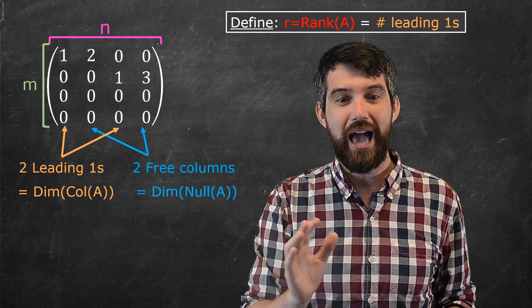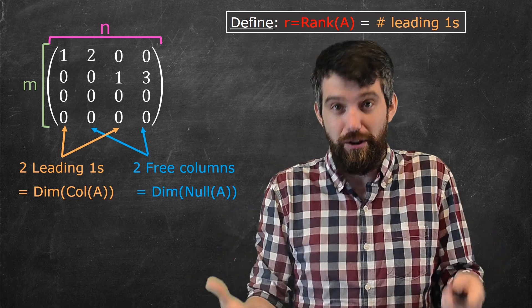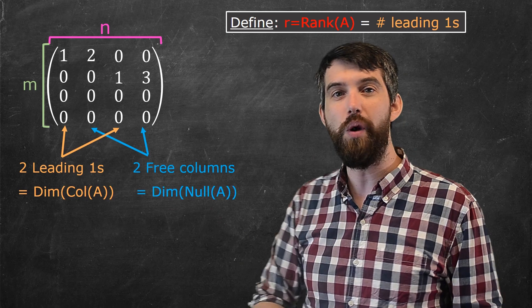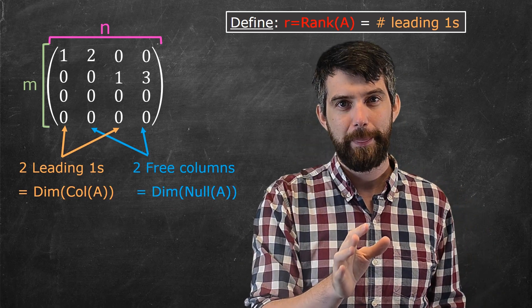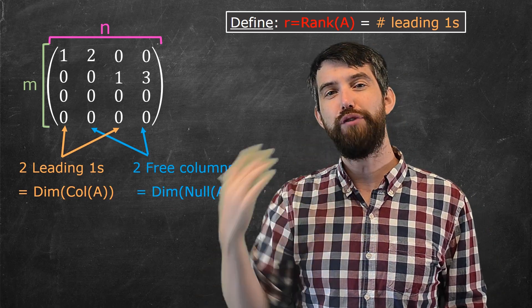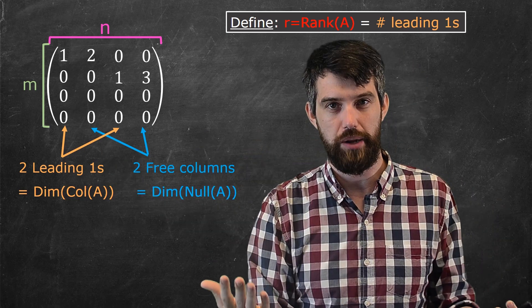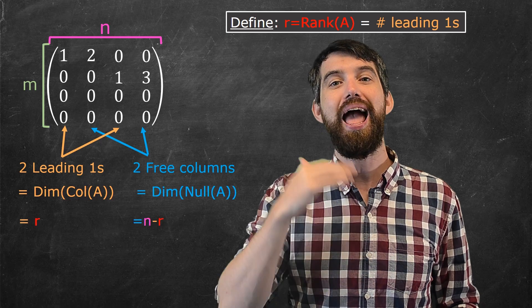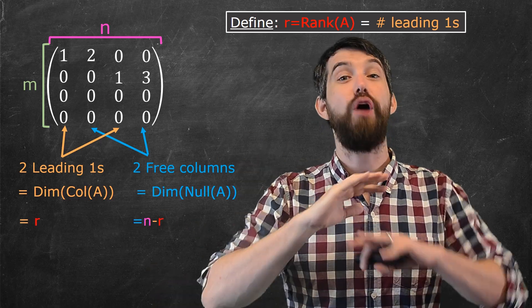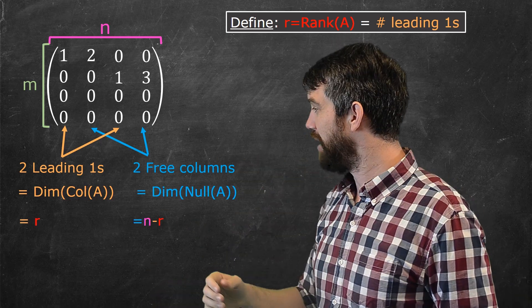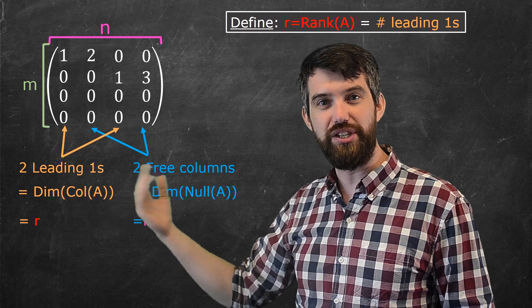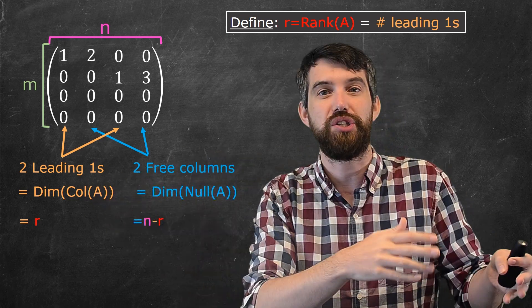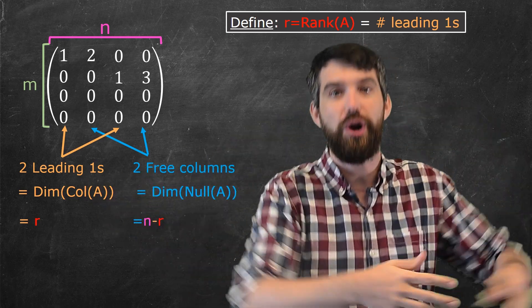Now, the reason why I want to look at it is because if I look at the dimension of the column space, or in other words, the number of leading ones, that's just r. But then if I look at the number of free columns, there's a total of n possible columns. r of them have leading ones, and so n minus r are free columns. I've divided up all of the n into r and n minus r, and of course n minus r plus r is just equal to n.